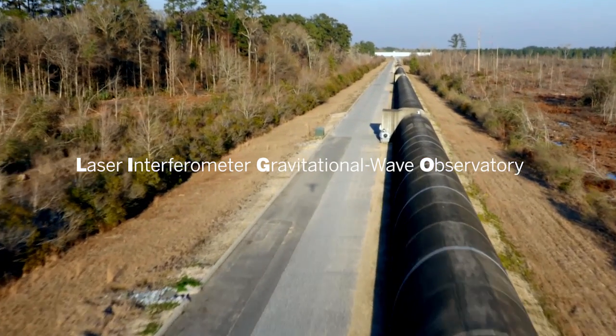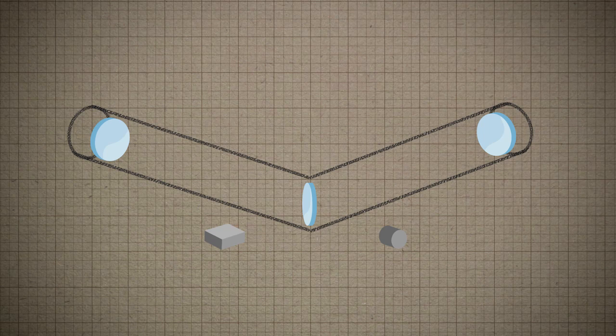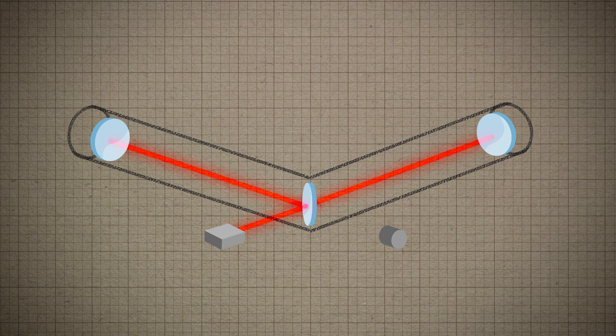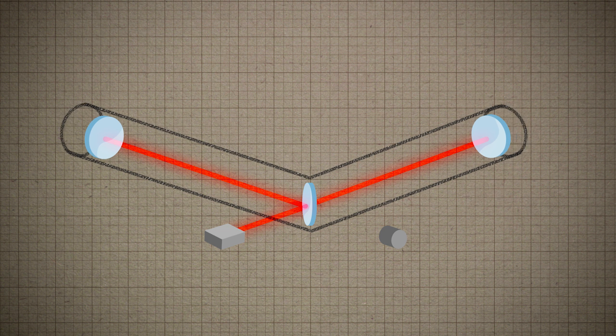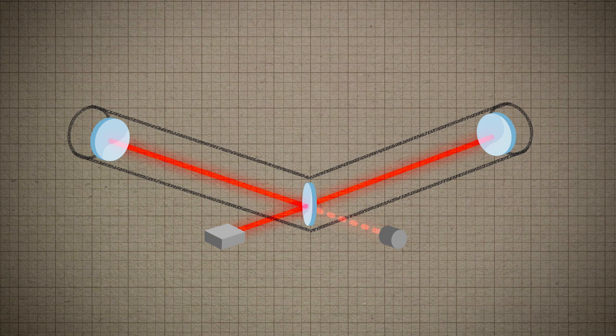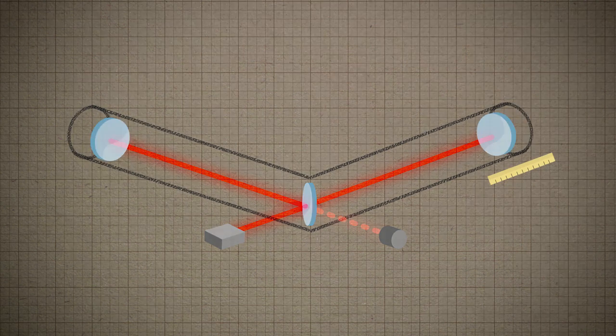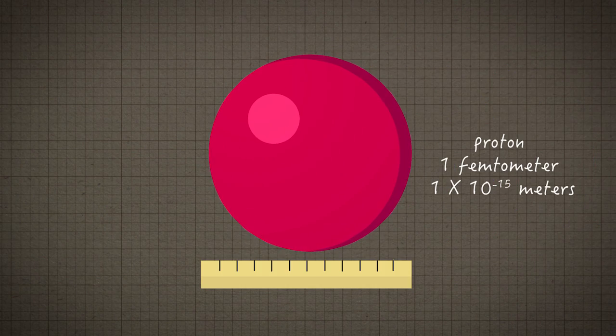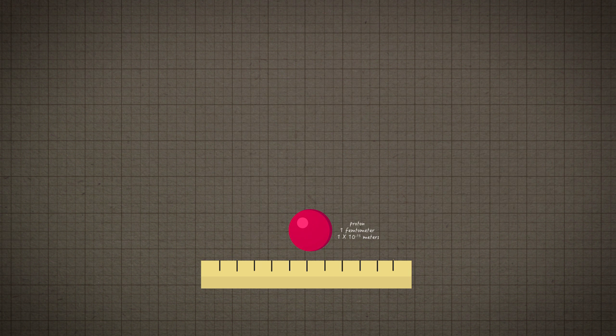To detect the stretching of space, LIGO uses laser light to measure and compare the lengths of the two arms. When a gravitational wave ripples past, it will stretch the arms by different amounts, causing the light to warble out of the interferometer. The measurements are sensitive to within one ten-thousandth of the width of a proton.